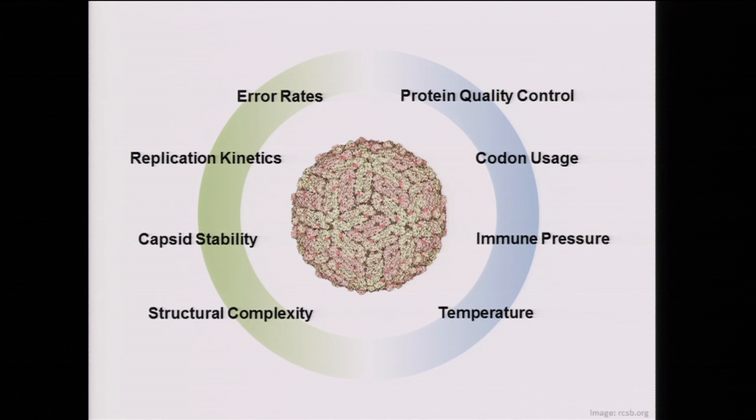On the left here I'm showing a number of the constraints from the virus side—things like high error rates associated with viruses, the very fast replication kinetics of viruses, capsid stability and structural complexity. And these are all answered by different pressures on the host side: protein quality control mechanisms in the cell, codon usage for various hosts, immune pressure, and temperature.